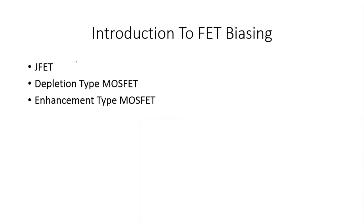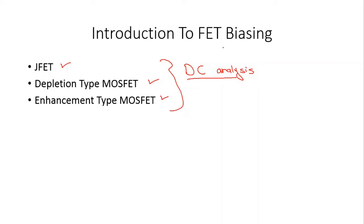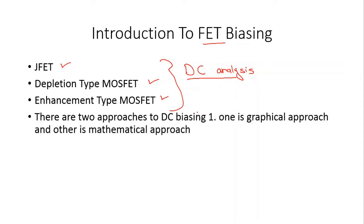In the previous chapter we studied the junction field effect transistor and the two types of MOSFET: the depletion type MOSFET and enhancement type MOSFET. In this chapter we are going to perform the DC analysis of these transistors. There are two approaches to DC biasing: the graphical approach and the mathematical approach.